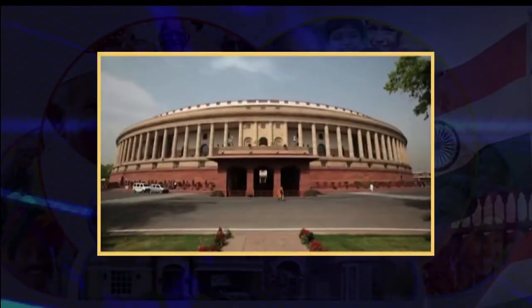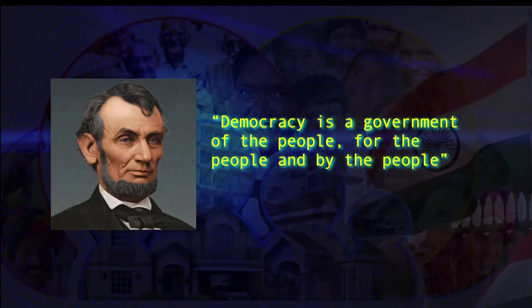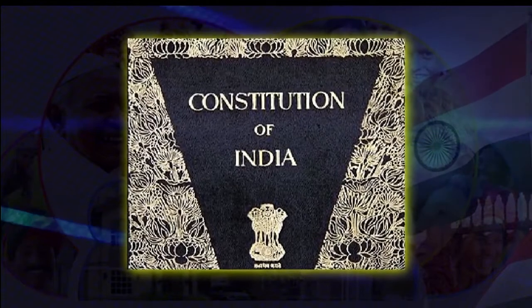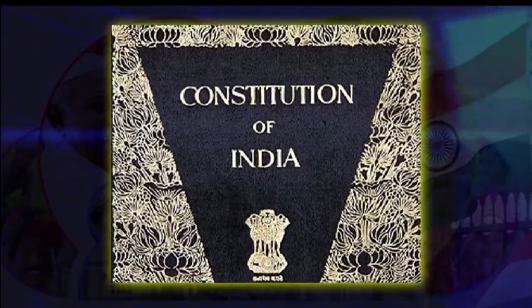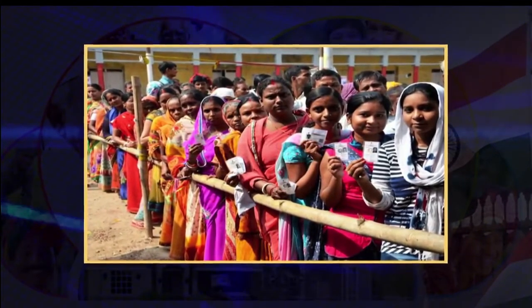Let us begin with understanding the meaning of democracy and the conditions that are essential for its successful functioning. When we are asked to define democracy, we generally quote a very popular definition: democracy is a government of the people, for the people and by the people. The Indian constitution is the largest constitution in the world and has effectively adapted itself to changing situations. Free and fair periodic elections for all political offices — legislative and executive — have been taking place regularly. After independence, India immediately adopted a system reflecting all the principles of developed democratic systems.